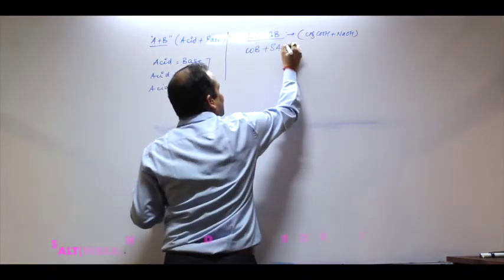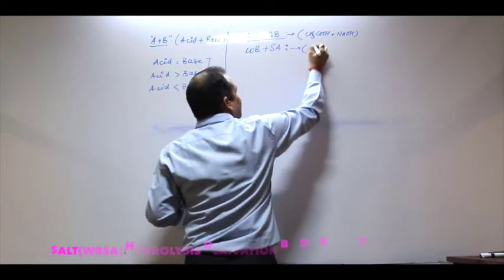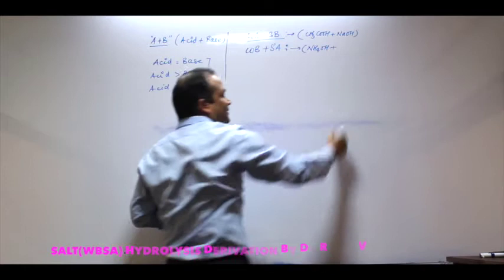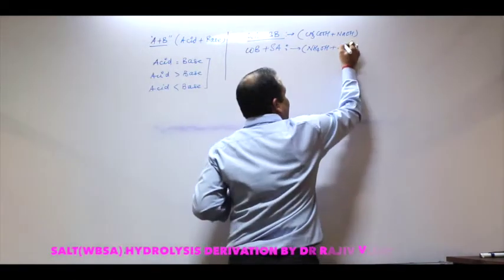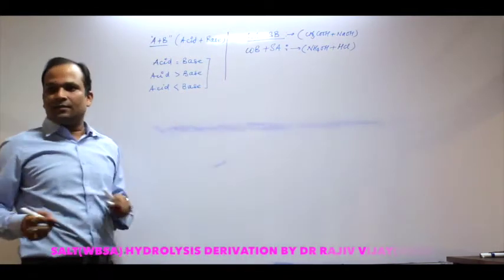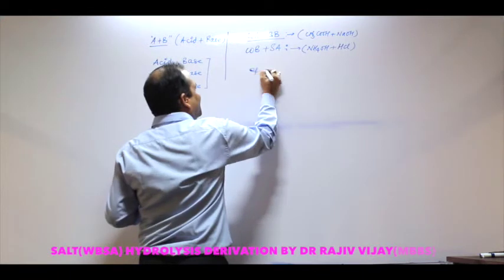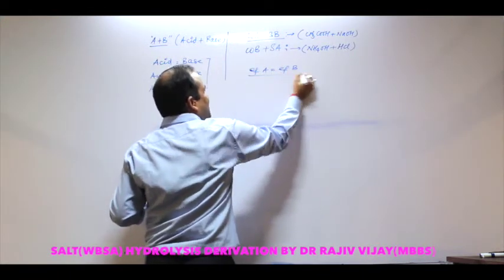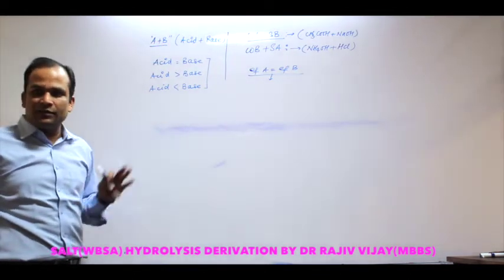Weak base plus strong acid example. The best example of a weak base is NH4OH and a strong acid is HCl. This is the first case: when the equivalence of acid is equal to equivalence of base, what does it make? Salt.